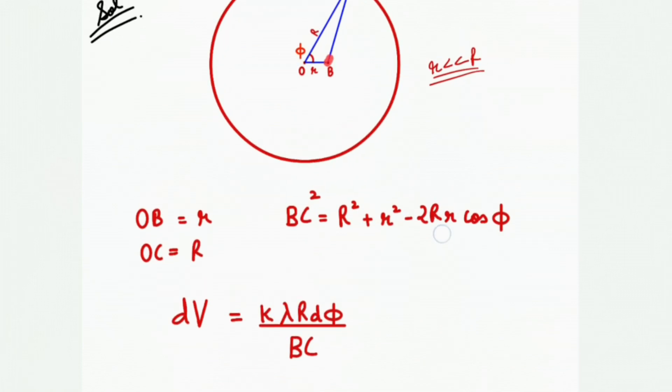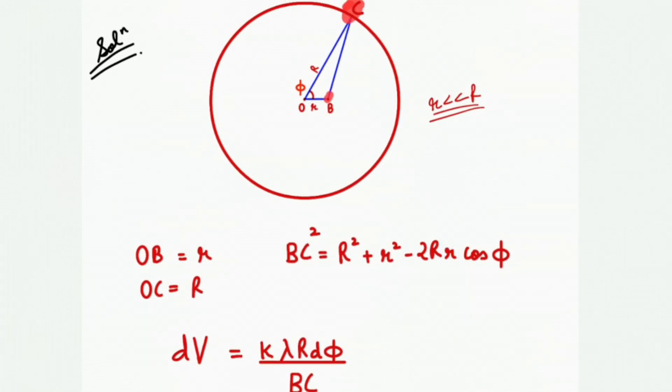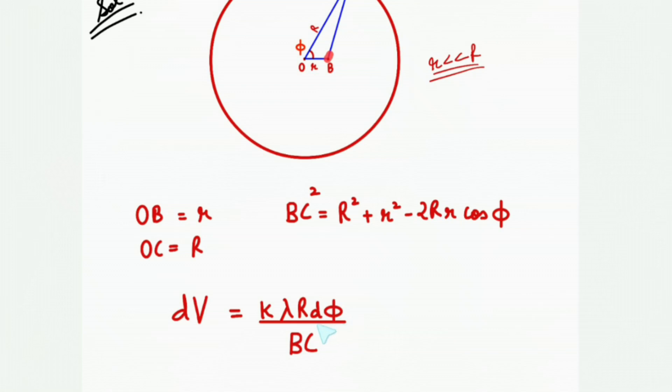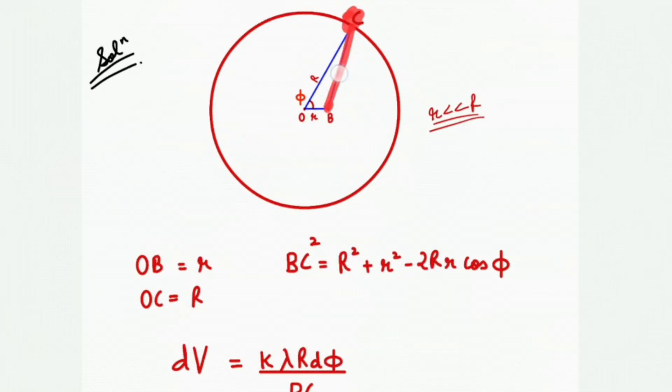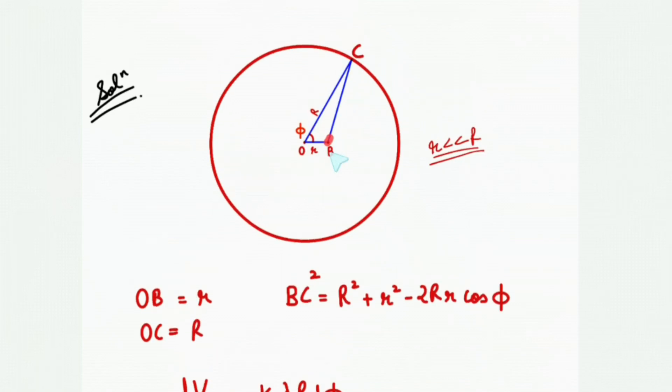So dV will be equals to k into the value of that differential charge will be lambda into r d phi divided by BC. So this is BC. Now we can find this BC with the help of cosine law.